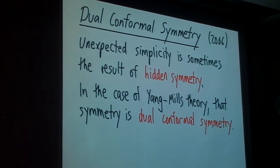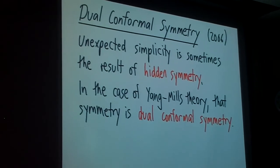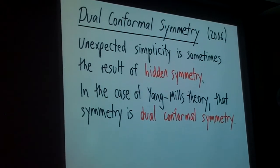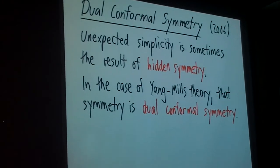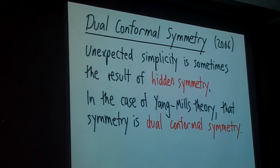So unexpected simplicity is sometimes the result of a hidden symmetry, and in the case of Yang-Mills theory, that symmetry is something called dual conformal symmetry, which has emerged in the last few years.